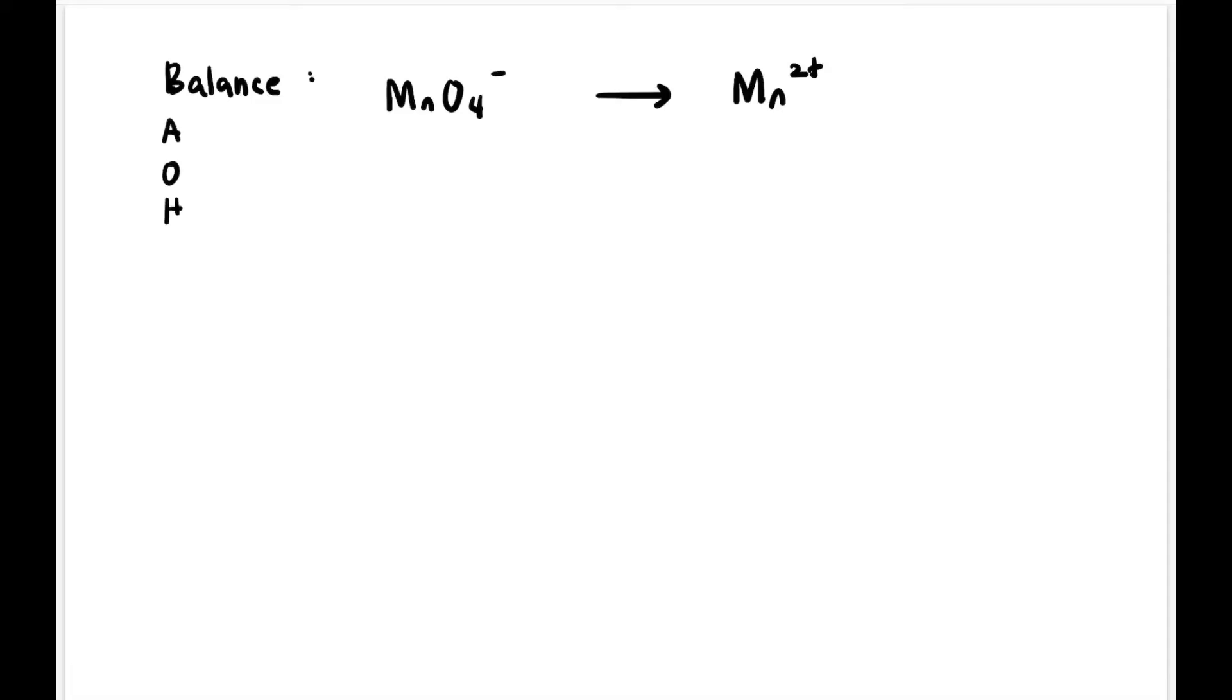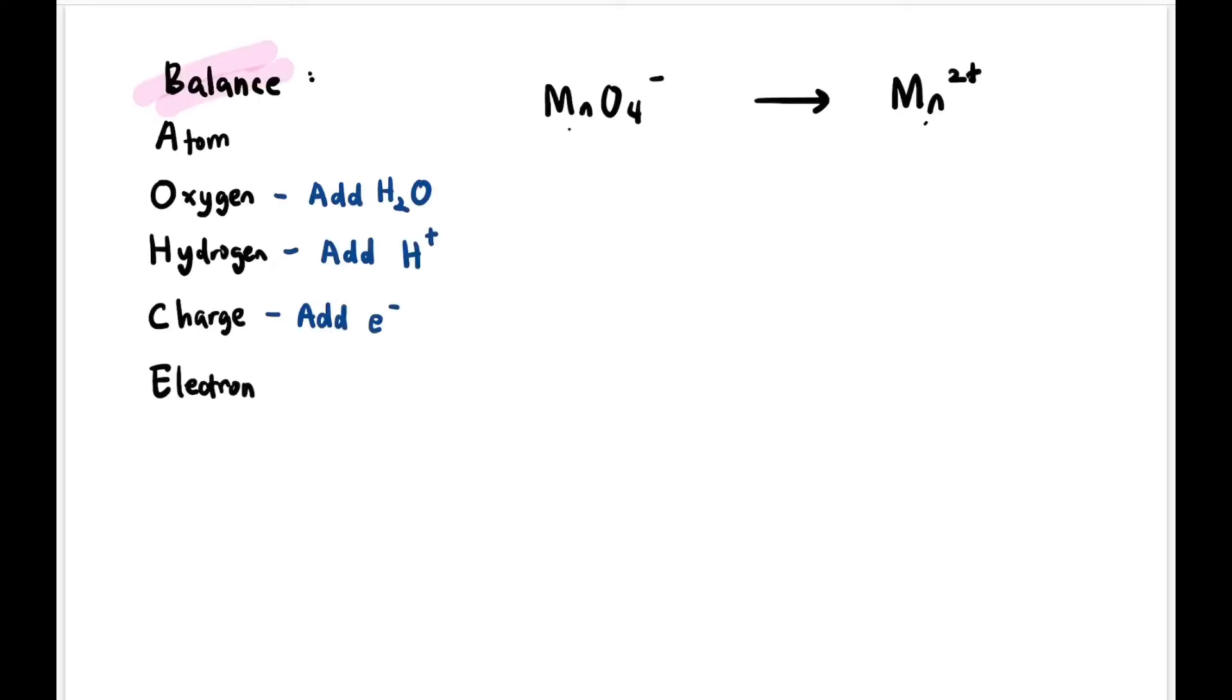We balance each equation one by one. So we balance what? We balance A, O, H. So balance atoms first. Atoms other than oxygen and hydrogen here is Mn. If we look on the left and right, both have Mn, so it's balanced. Same amount. So now let's look at oxygen.